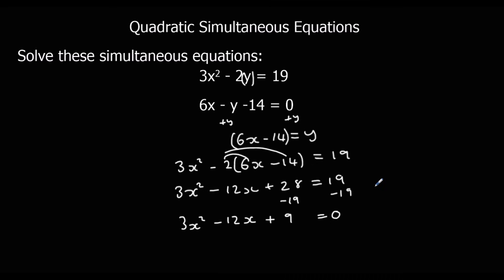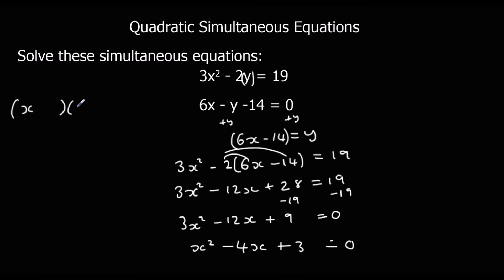Now I need to factorize. I can see each of these numbers is in the 3 times table, so I'll divide through by 3 first, giving x squared minus 4x plus 3 equals 0. Factorizing: the only factors of 3 are 3 and 1, and I need minus 4, so minus 3 minus 1. Therefore x equals 3 or x equals 1.